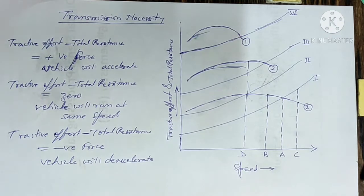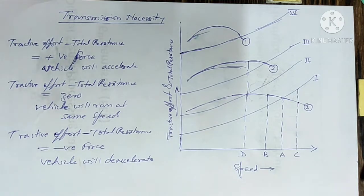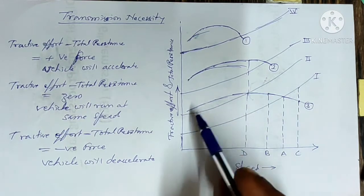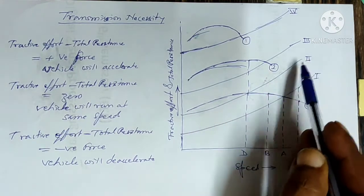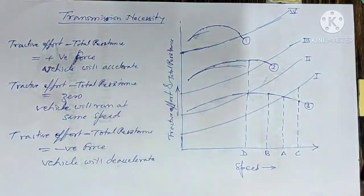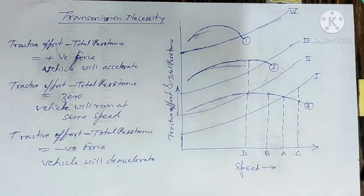Miscellaneous resistance is constant with respect to speed, and the gradient resistance is also constant with respect to velocity. If you sum up, then these particular curves become the total resistance for the motion.